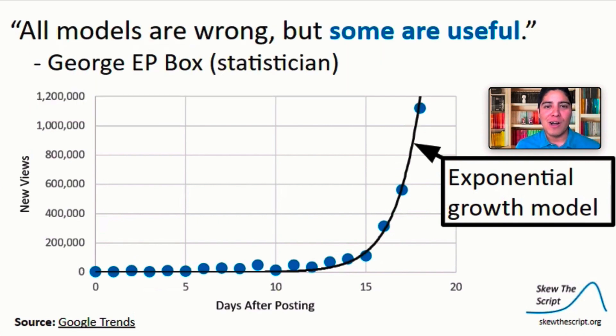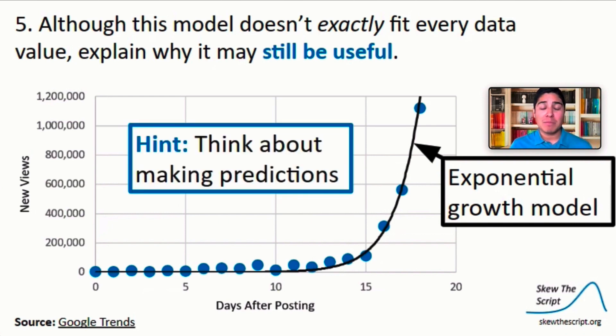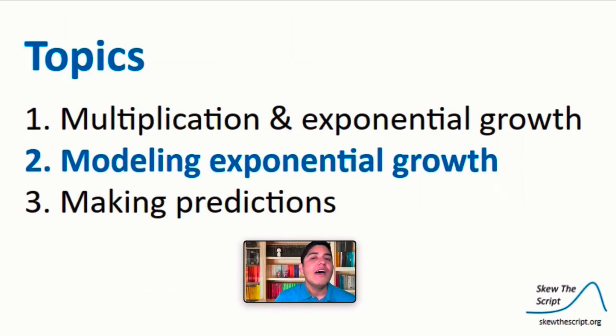All models are wrong, but some are useful. George E.P. Box, one of our famous statisticians. Our model certainly isn't perfect, but it can help us. Although this model doesn't exactly fit every data value, explain why it might still be useful. Pause the video and take a moment to answer question five in your notes. Why is this model useful? Maybe consider how it can be used to make predictions. Later in the video, we'll see how an exponential model can be used to make predictions. But for now, let's take a look at topic number two, modeling exponential growth.